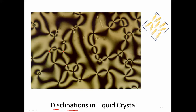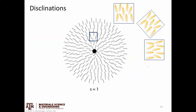You see disclinations especially prevalently in liquid crystals because they are associated with things like twists and splays that you're more likely to see when we have these sort of weakly bounded together fixed units that are free to point in particular directions. Liquid crystals have an anisotropic shape — they're not spherical — and so these are examples of rod-like liquid crystals.